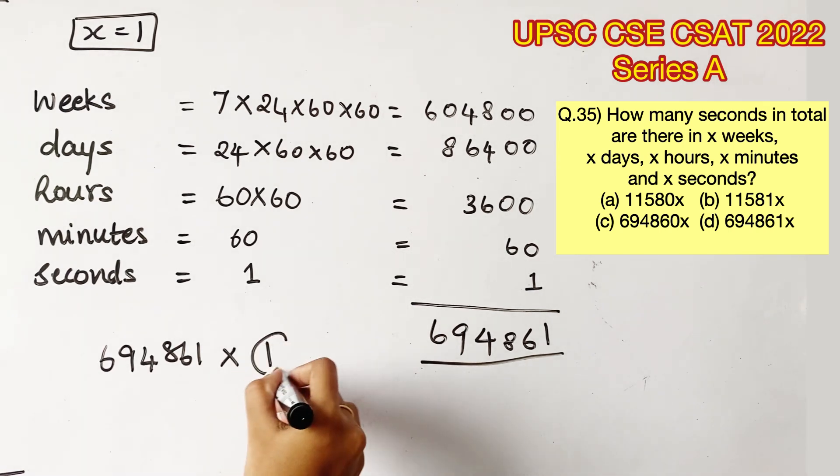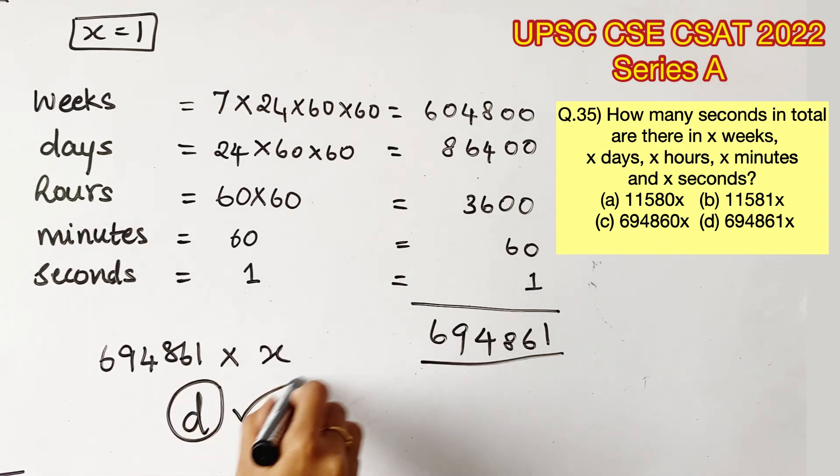So we don't know the value of x. We need to write x as such. Therefore 6,94,861 times x will be the answer. Option D is the right answer.